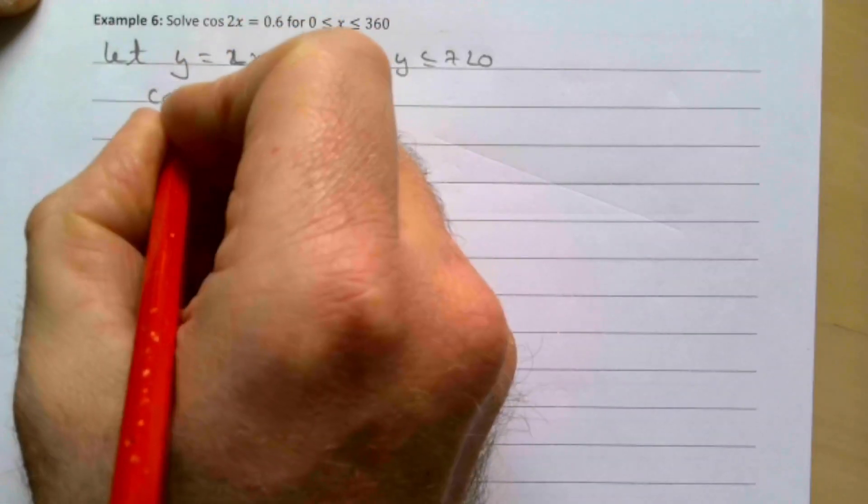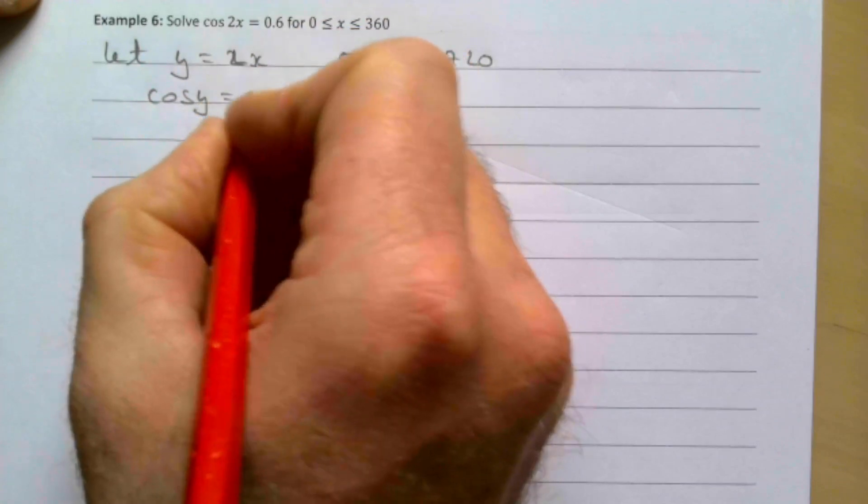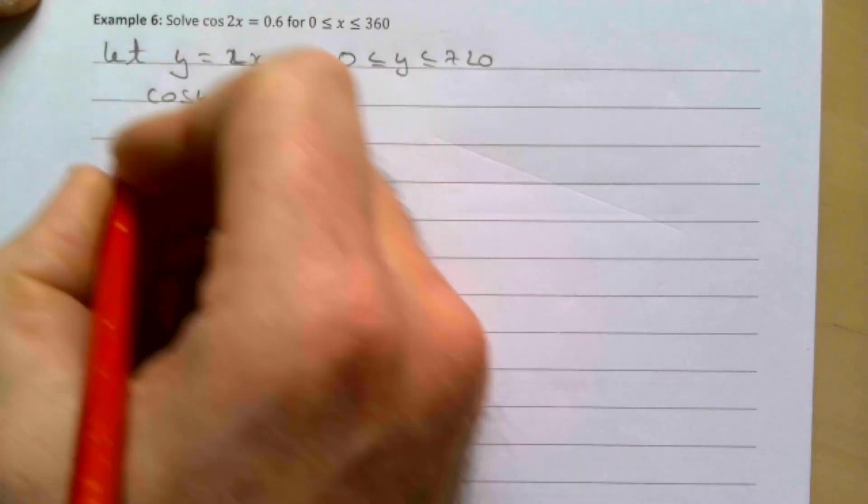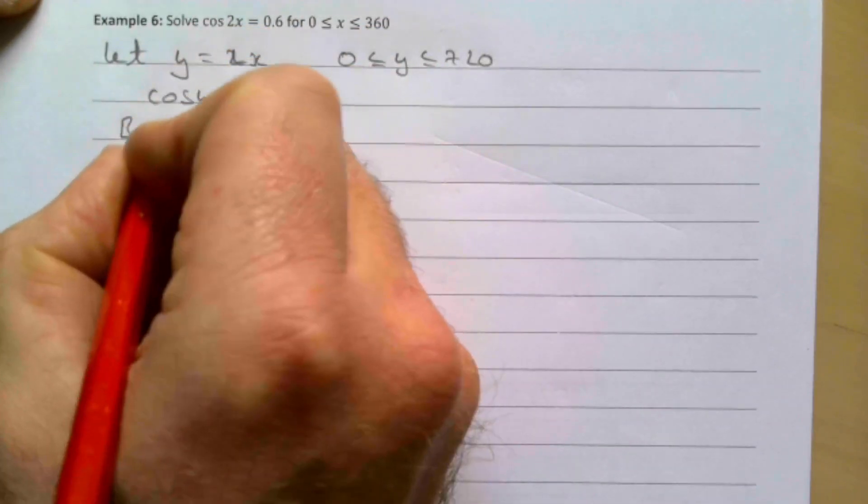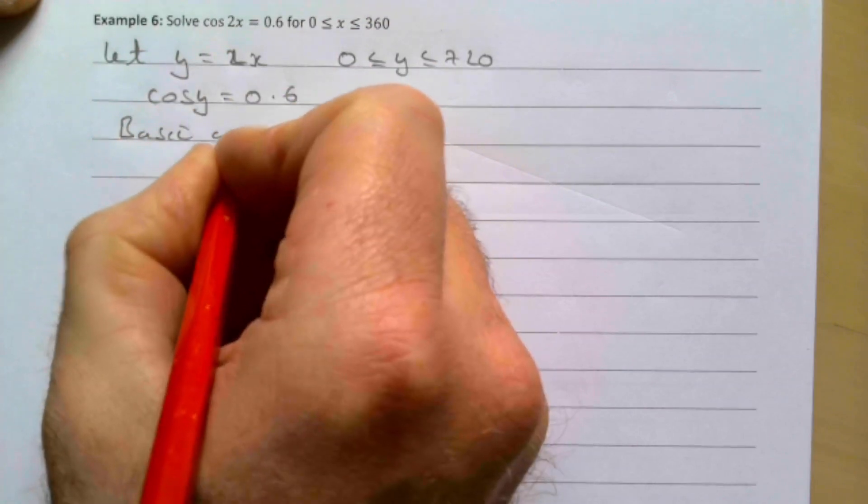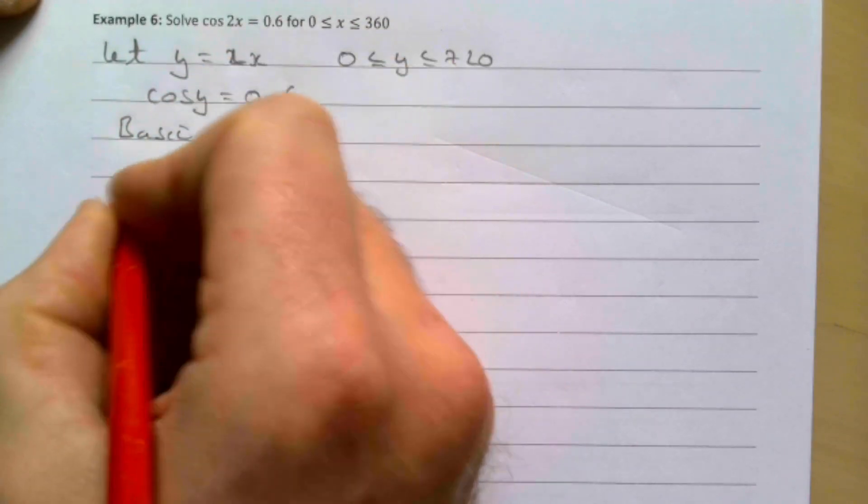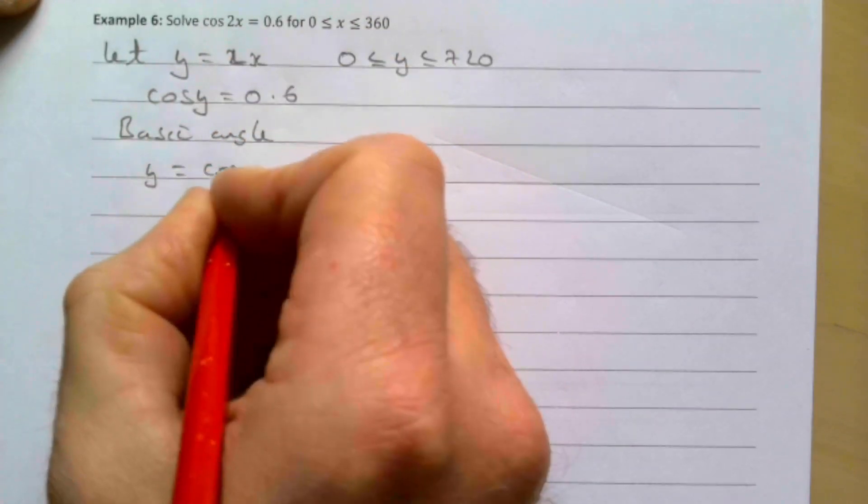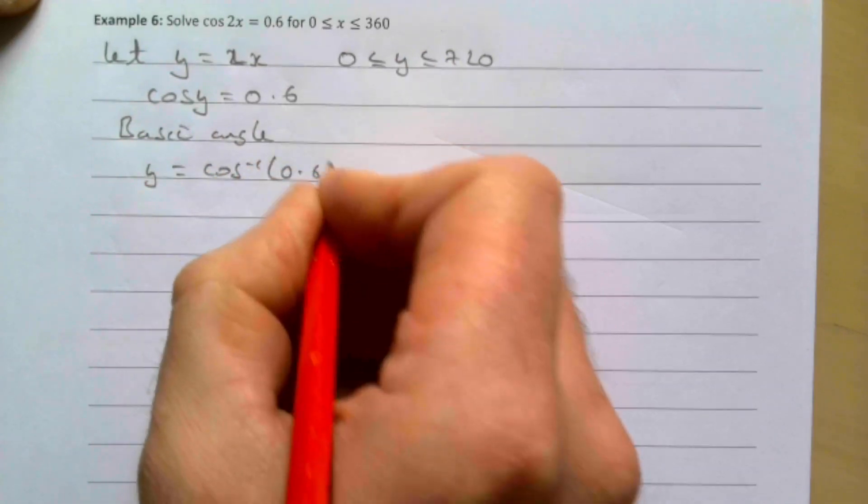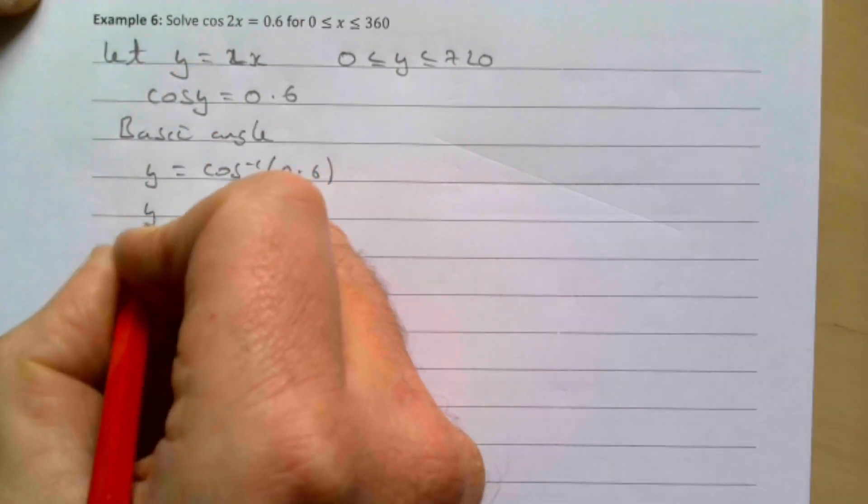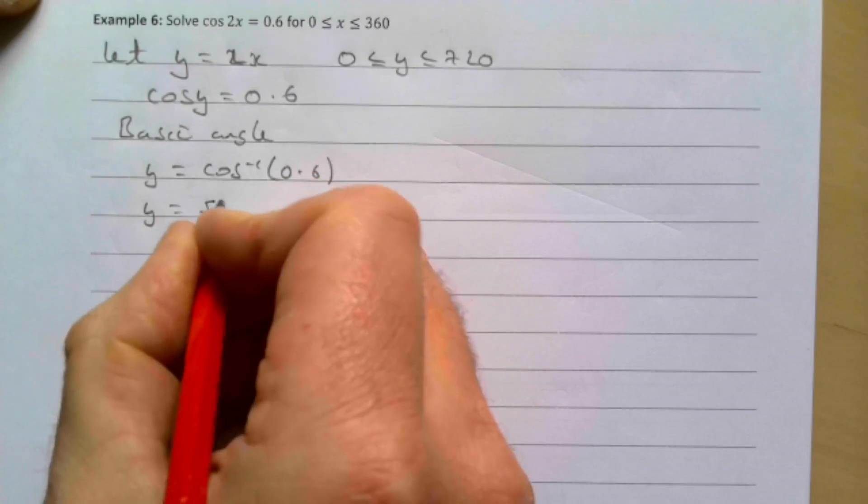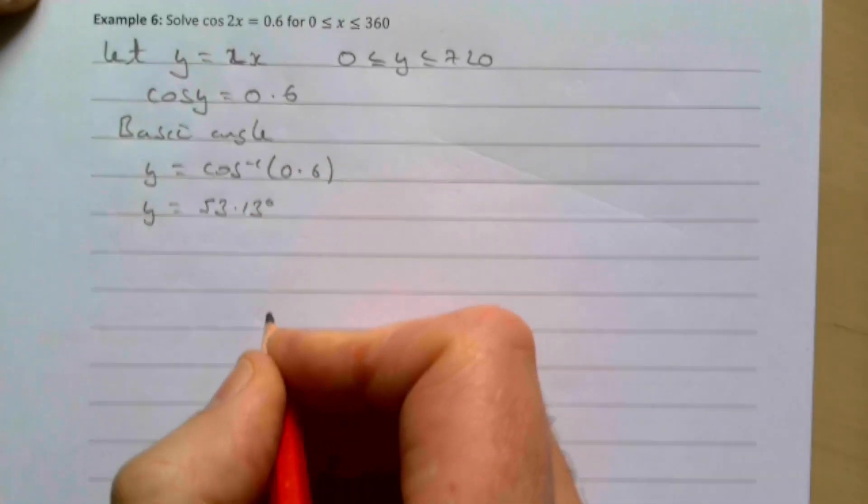So we have cos y equals 0.6, and we find our basic angle. Basic angle is y equals cos inverse of 0.6, and y is 53.13 degrees.